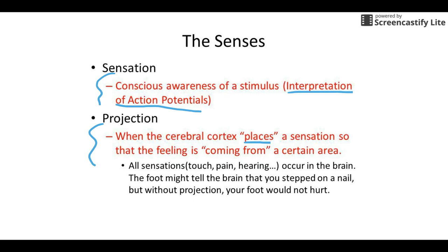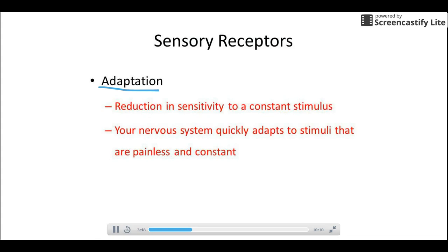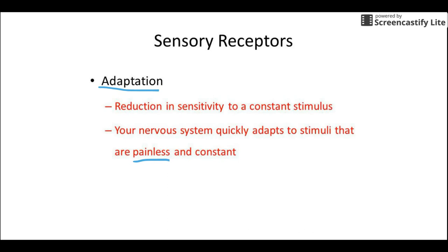The next concept is adaptation. If you have a constant stimulus, your brain tends to filter it out. New information is deemed important, but constant information gets filtered. For example, think about sitting right now — you can feel the seat underneath you if you think about it, but your brain filtered it out when you weren't thinking about it. Your brain does this well for anything non-painful. Think about a fan blowing or a computer humming — that information comes in, but your brain filters it to avoid sensory overload. That's adaptation.